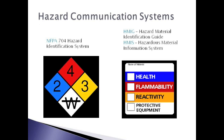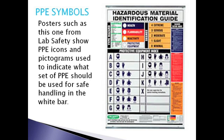Now let's take a minute to go over the white bar, the fourth area on the signal. In both the HMIG and HMIS systems, the white bar is used to indicate what personal protective equipment, or PPE, must be used when handling the material safely. A letter, number, or icons are often used. Posters displayed in various areas around the lab give a full description of the PPE symbols used. For example, if the material has an icon showing safety glasses and gloves, then an operator should be wearing that PPE when handling the material.